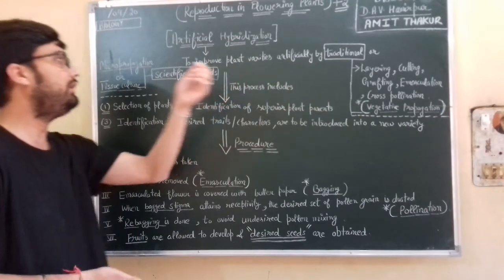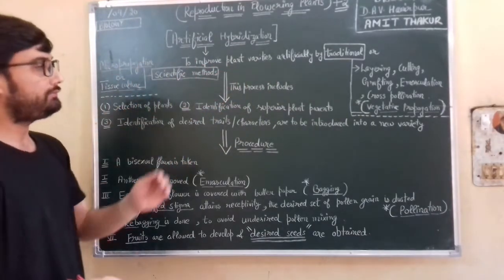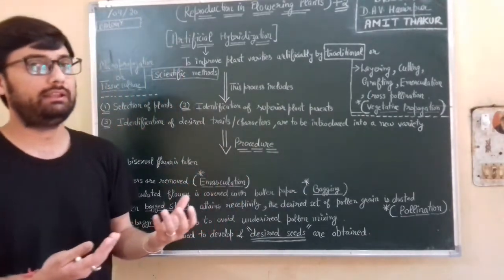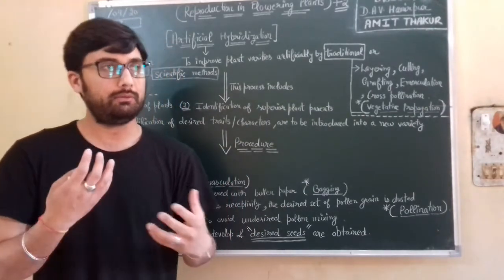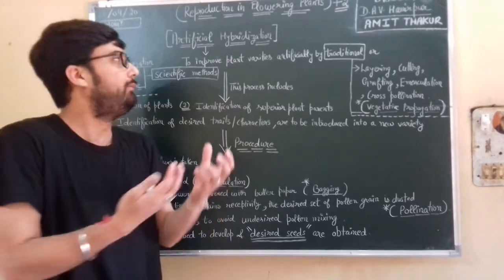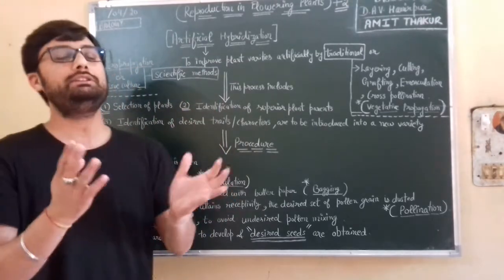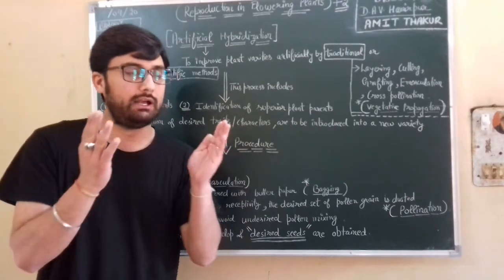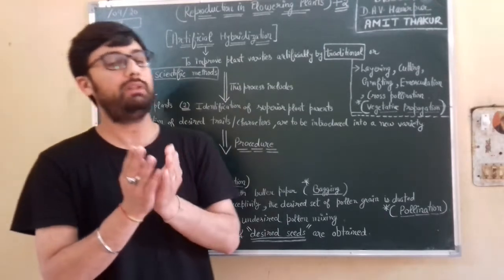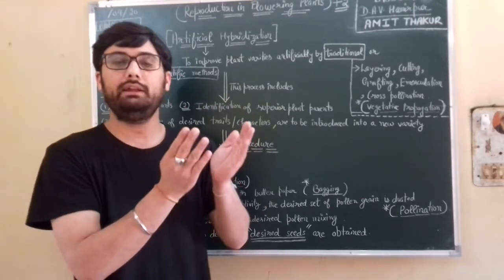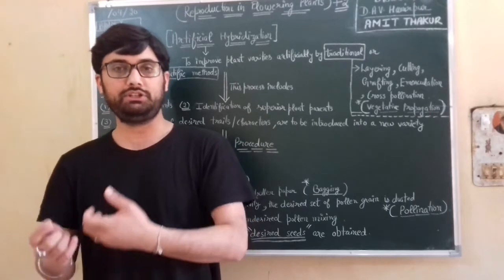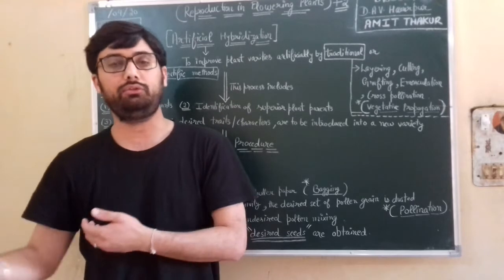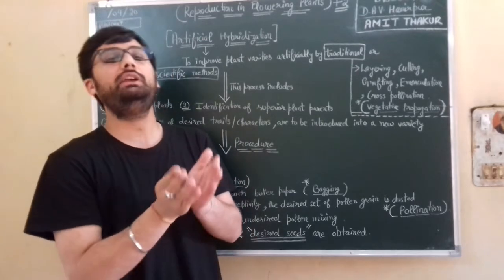So this process includes when we perform a scientific way, when we perform this process. When we think that we have a wheat seed in India, its production per hectare is less as compared to the same variety in the USA or Canada or in Australia. So how do we improve this process?